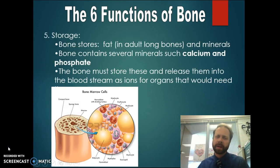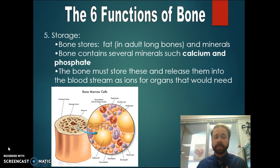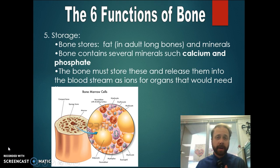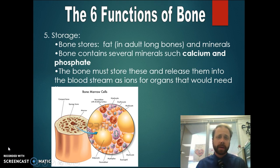Storage is a big one — a lot of people don't realize the bone stores fat and minerals for us, including calcium and phosphate. The way this works is that calcium, phosphate, and other minerals are released into the blood, which then delivers them to the organs that need them. So it's kind of like a storage system, and when an organ needs something, it will be released by the bones into the bloodstream.